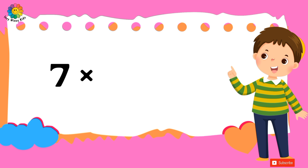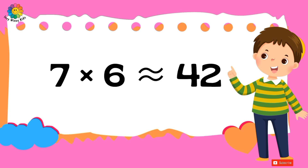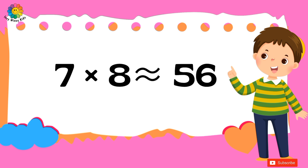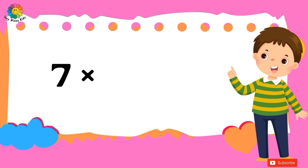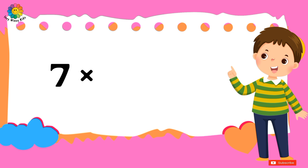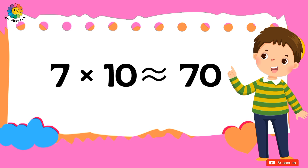Seven six are forty-two. Seven sevens are forty-nine. Seven eights are fifty-six. Seven nines are sixty-three. Seven tens are seventy.